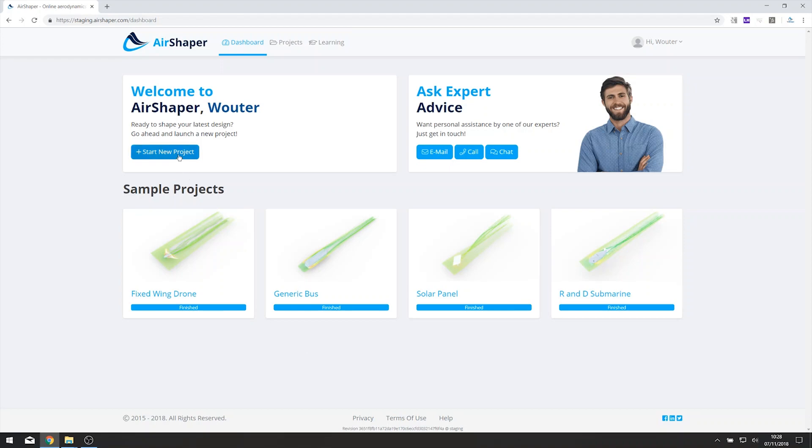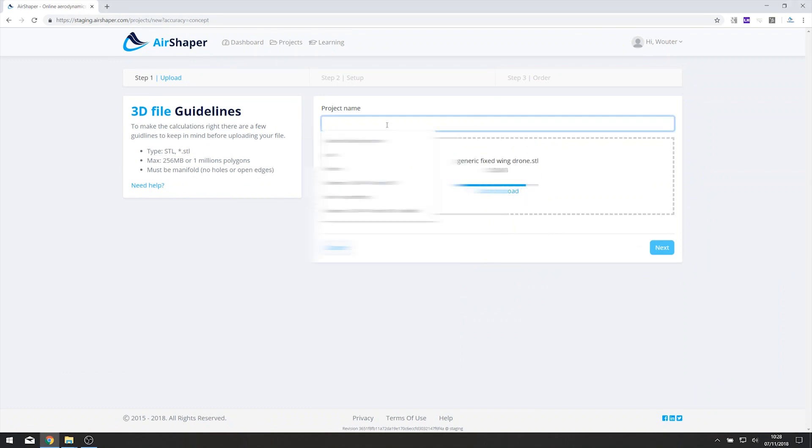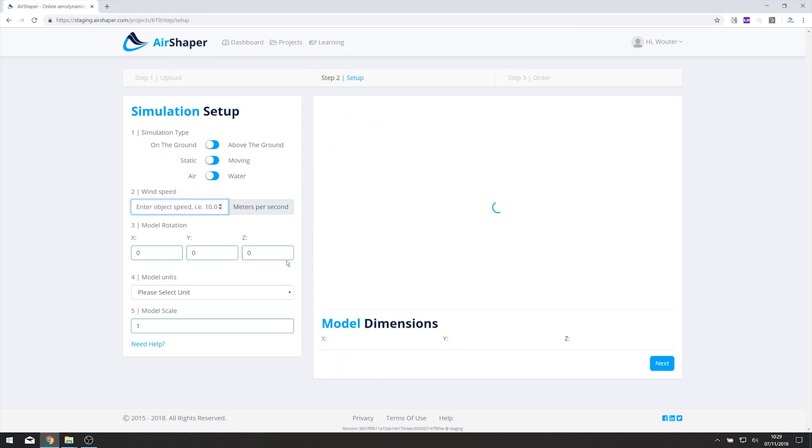So we want to start a very simple simulation, just a concept one, and I have a very simple file for it, a generic fixed wing drone. So I gave it a title, let's click next, and what we want to do now is to have it fly above the ground, obviously it's a drone, and to keep it moving and not static.